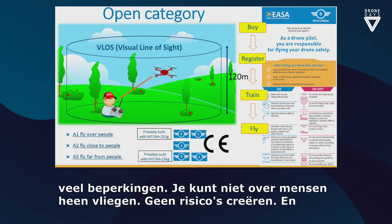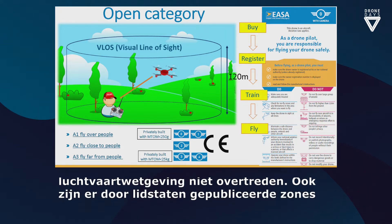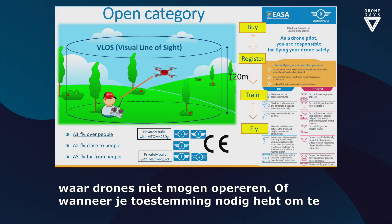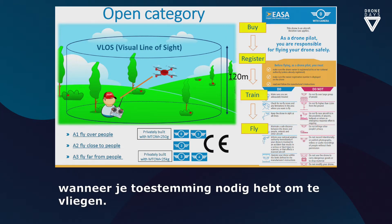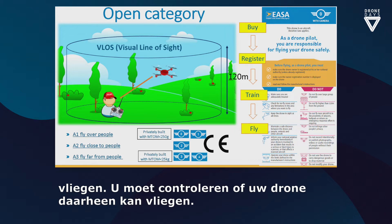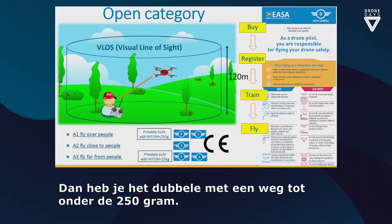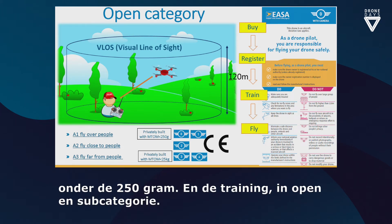Unless the member state identifies geographical zones — zones published by member states where drones are forbidden to operate or may require special authorization — if your zone is not covered by these geographical zones, more or less you are able to fly everywhere. This category also includes privately built drones with a weight below 250 grams. Training requirements for each subcategory in the open category will be addressed shortly.